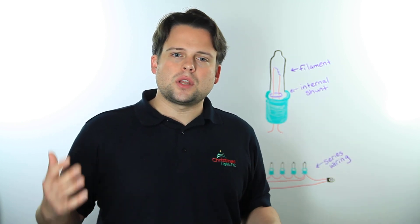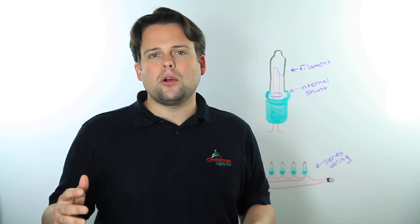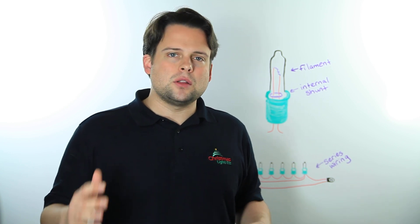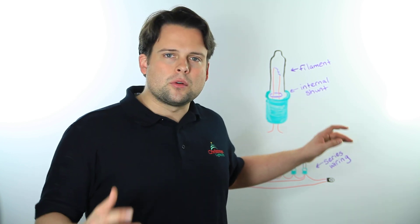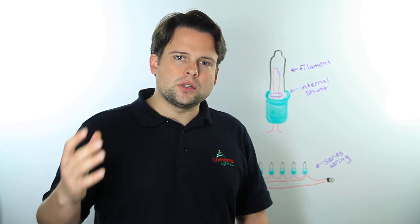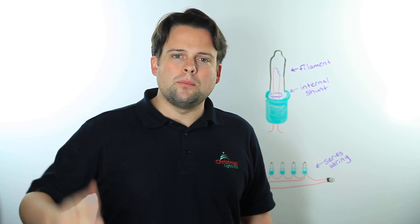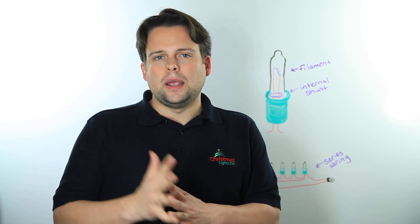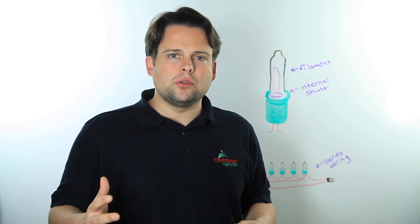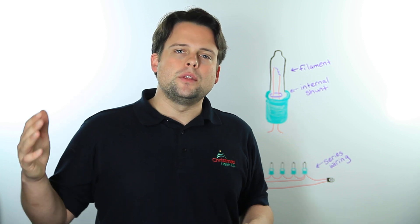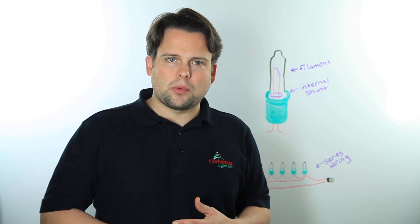The internal shunt is just a small piece of wire used in parallel to the filament. As long as the internal shunt remains intact, current will continue to flow and bulbs will continue to stay lit if one bulb were to go out. It is only when the shunt loses connection with the wire that you start to see other bulbs become affected.